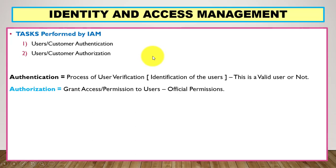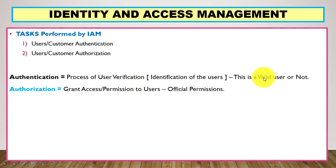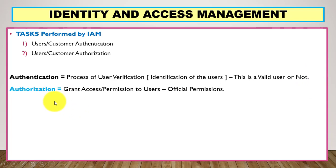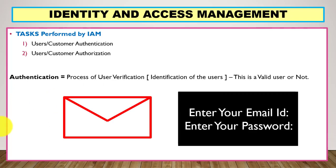IAM performs two tasks: first is authentication, second is user authorization. Authentication is the process of user verification — identifying whether this is a valid user or not. Authorization means if the user is valid, then we will grant access so the user can use different resources. In authentication we check whether the user is valid; in authorization we grant access to the user.